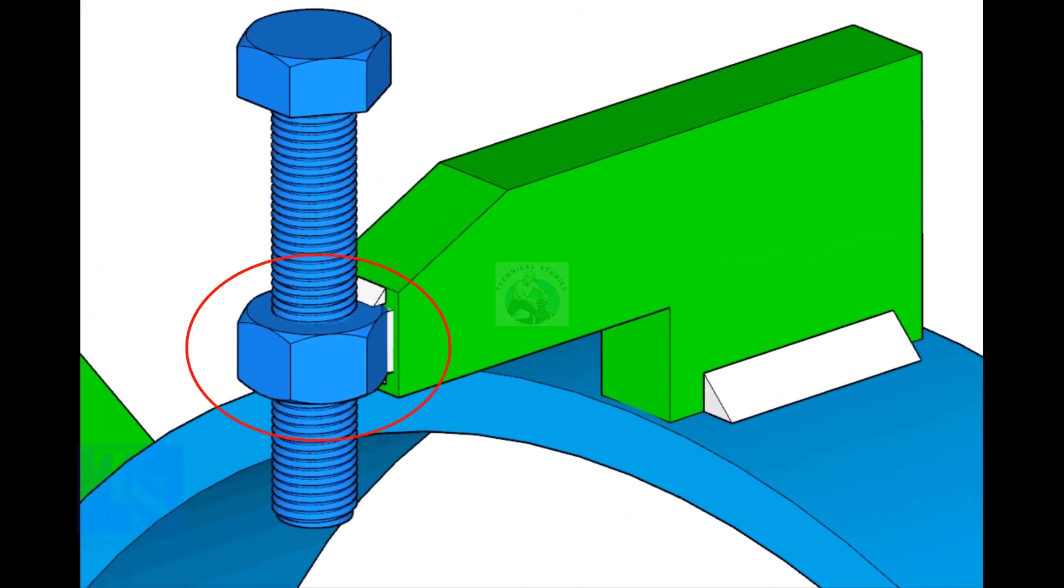The nut shall be welded with the L-clamp from all around. This welding shall be a minimum of five millimeters on both sides.